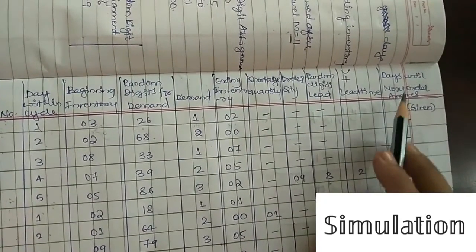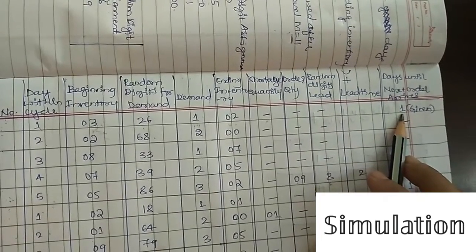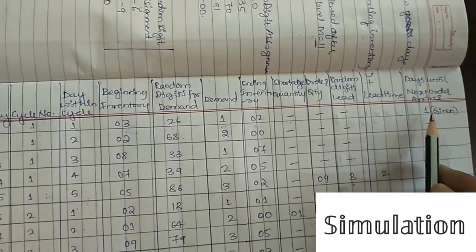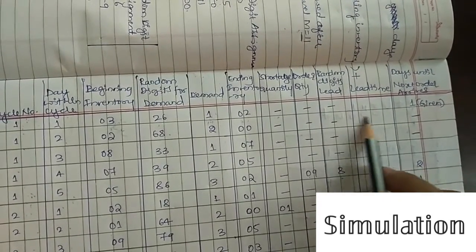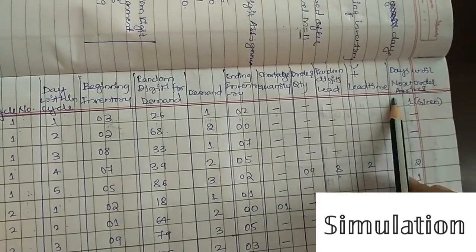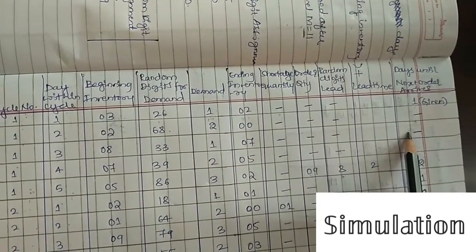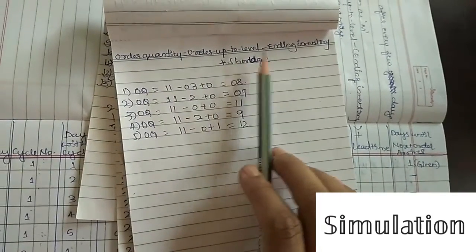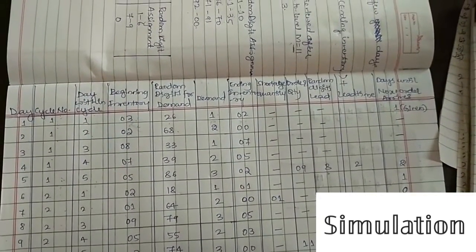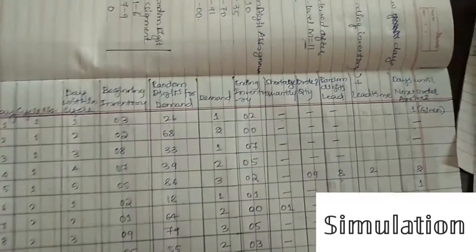The question states lead time is 1 day until the first order arrives. One day means one row — after one row the order arrives. The formula for order quantity is: order up to level minus ending inventory plus shortage. The order quantity is only calculated at the end of each cycle.